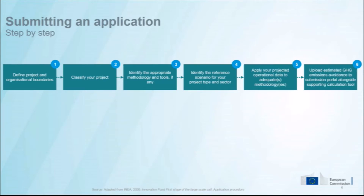Applicants will have to run through a few different steps in order to calculate the greenhouse gas emission avoidance potential, and we have structured our presentation around those. Every applicant will have to define project and organizational boundaries, classify the project in the correct sector, and identify the methodology to be used — that is step three. Then the applicant will have to identify the reference scenario in step four, apply the project data to calculate the project emissions in step five, and finally upload the calculations in the portal together with the submission of the application.